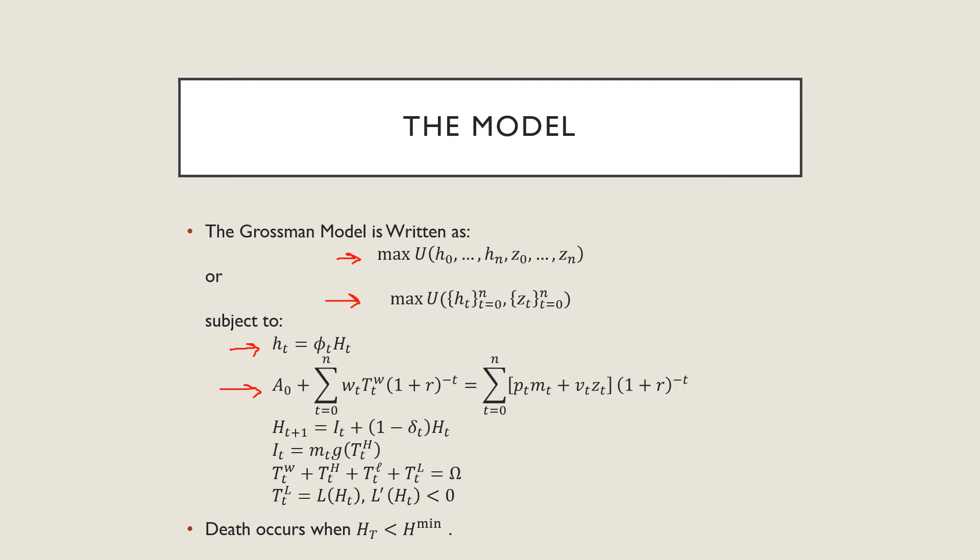Our next one is just a budget constraint where we have an initial endowment of our assets, and we discount the flow of wages that we have, and that could be allocated to a budget where we have medical expenditure and all other goods. So the price of medical expenditure is denoted by p, and our price of all other goods is denoted by v here.